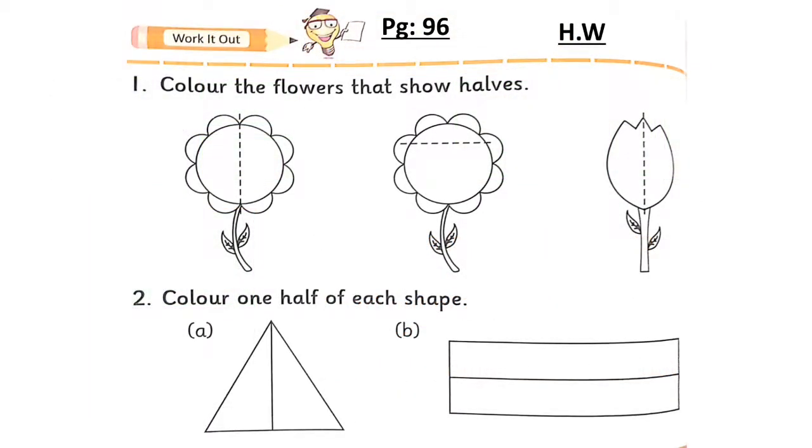Now open page 96 and it's your homework to complete exercise work it out. Question number one, color the flowers that show halves. Look at these flowers. Find which flowers show halves and then color them.